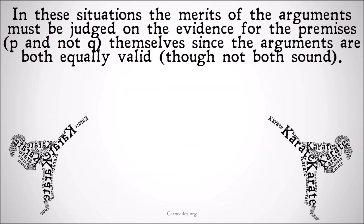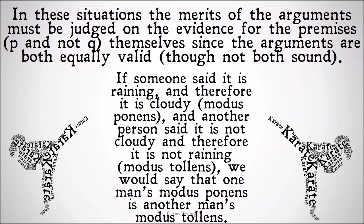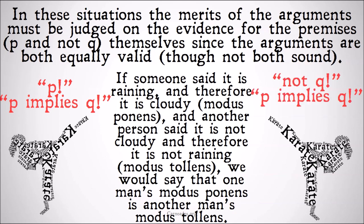In these situations, the merits of the arguments must be judged on the evidence for the premises — either P or not Q. So in our epistemology example, you would have to judge them on the merits of Moore's argument for the claim that he knows he has a hand in front of his face, and the claim that it's possible that you are in the matrix. Since the arguments are both equally logically valid, they can't both be sound. If someone said 'it's raining, therefore it's cloudy' — modus ponens — and another person said 'it is not cloudy, and therefore it's not raining' — modus tollens — we would say that one man's modus ponens is another man's modus tollens. They agree on the implication, but disagree on P and Q.